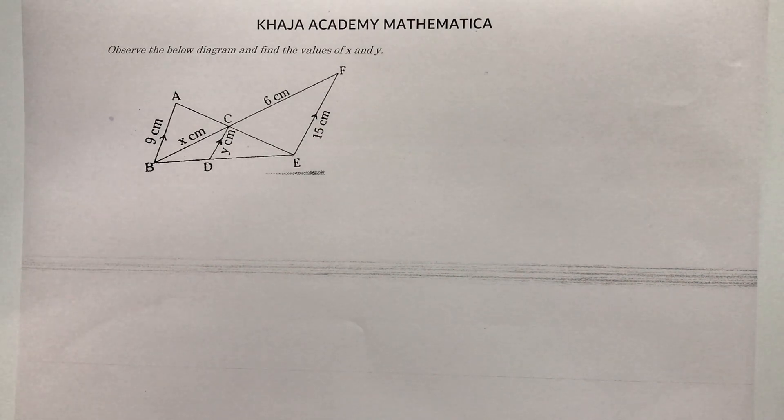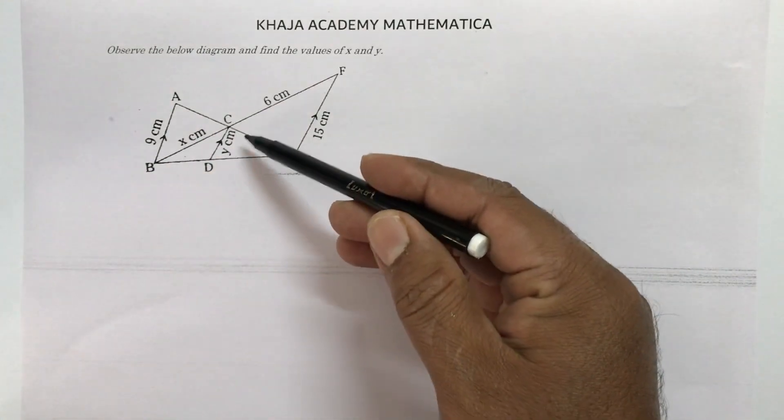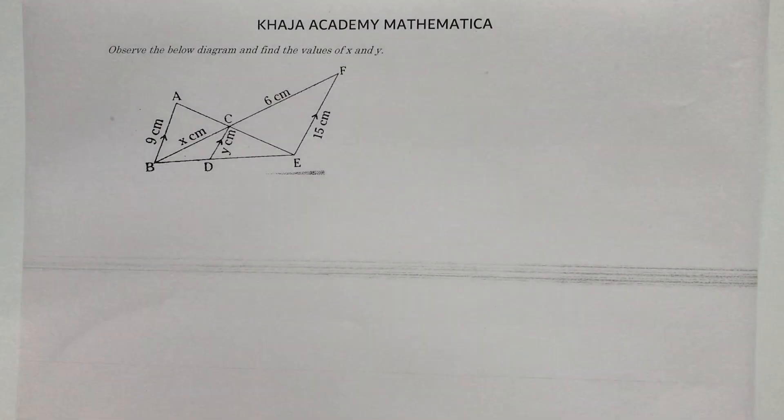Class 10th important problem from similar triangles. Here with the help of this diagram, we need to find the values of x and y. So if you observe here, they gave in the diagram that AB is parallel to CD and CD is parallel to EF.